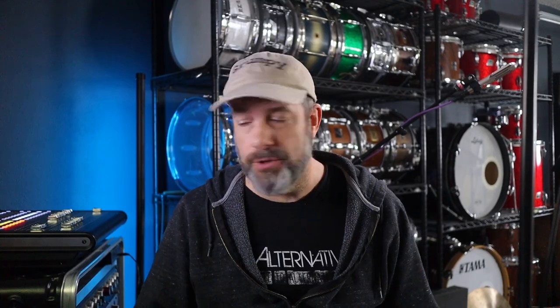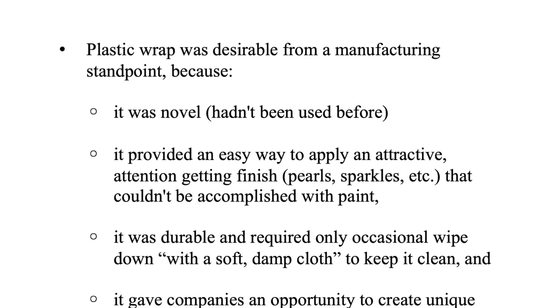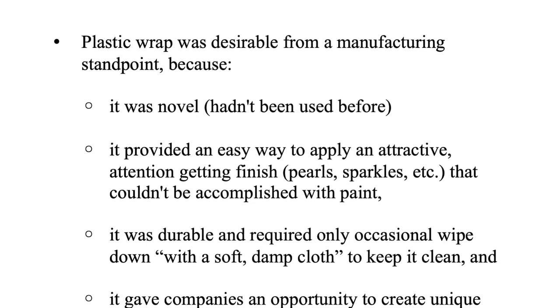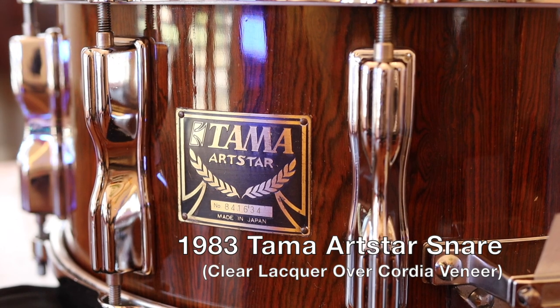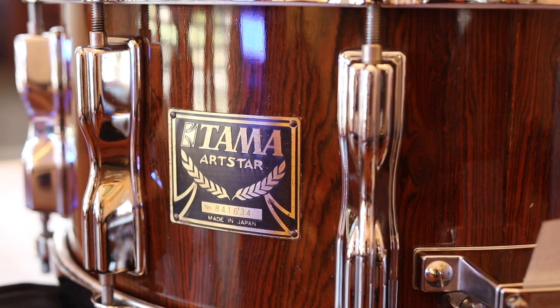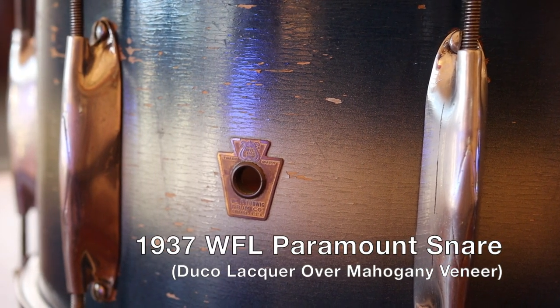It was introduced in the 20s and 30s as a finish for drum manufacturers. It was novel. It provided an easy way to apply an attractive, attention-getting finish — the pearls, the sparkles — that couldn't be accomplished with paint. The plastic finishes allowed aesthetics you really couldn't get with paint. They were painting drums, but typically just black or white or some solid color. When you look at old painted drums, they aren't shiny, polished, deep, modern-style glossy finishes — they were more or less just sprayed down to cover the grain and get the drum out the door.